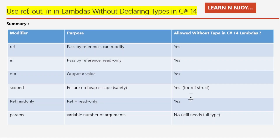Whatever we discussed, I've put it in a summary table. This table shows which parameter modifiers in C# — ref, in, out, scoped ref, readonly, and params — can now be used in lambda expressions without needing to explicitly write the parameter types, thanks to C# 14. While most modifiers now support this cleaner syntax, params is the only one that still requires a full type declaration — it does not support omitting the type in C# 14.